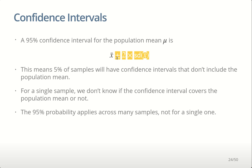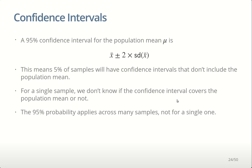95% of the confidence intervals we compute are going to capture the population mean, which means 5% will not. 5% of our samples will be so extreme that even applying plus or minus two standard deviations won't get back to the center. For a single sample we don't know if our confidence interval covers the population mean or not, because we don't know if the one we have is an extreme one or a typical one. The 95% probability applies across many samples, not a single one — it applies in the long run.